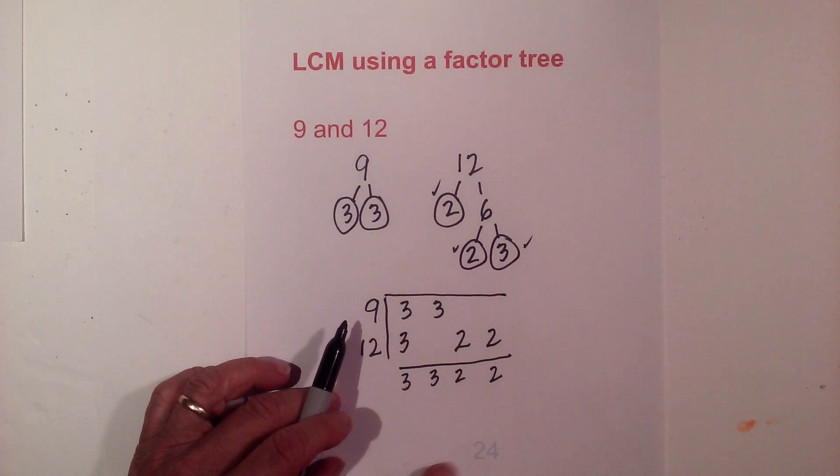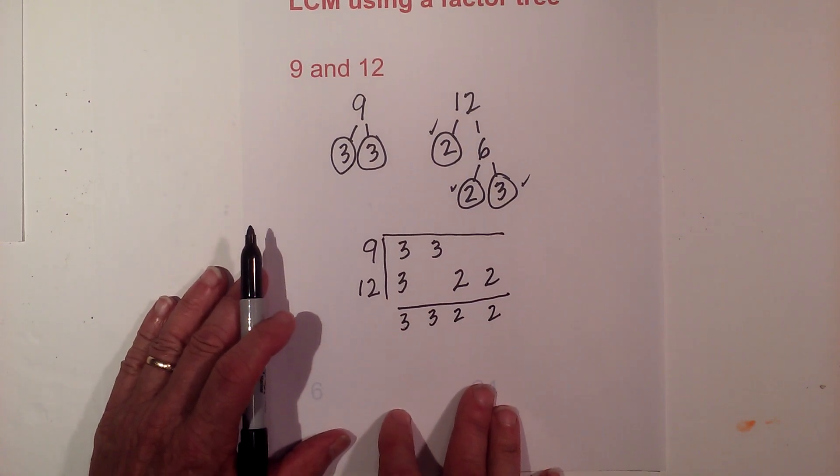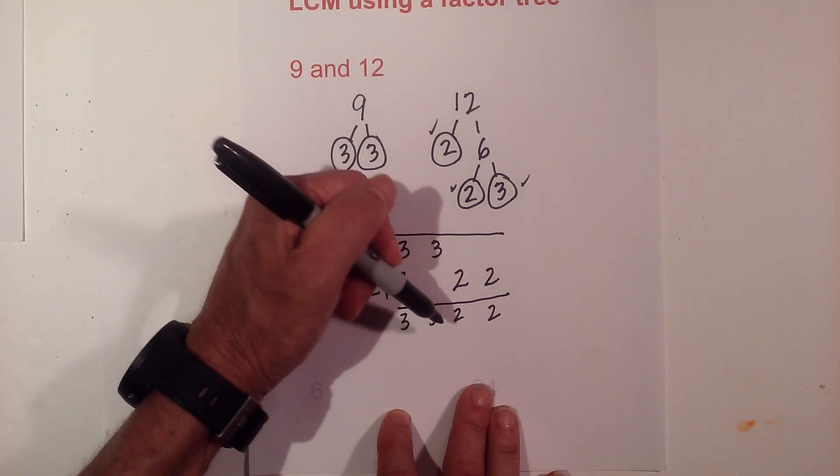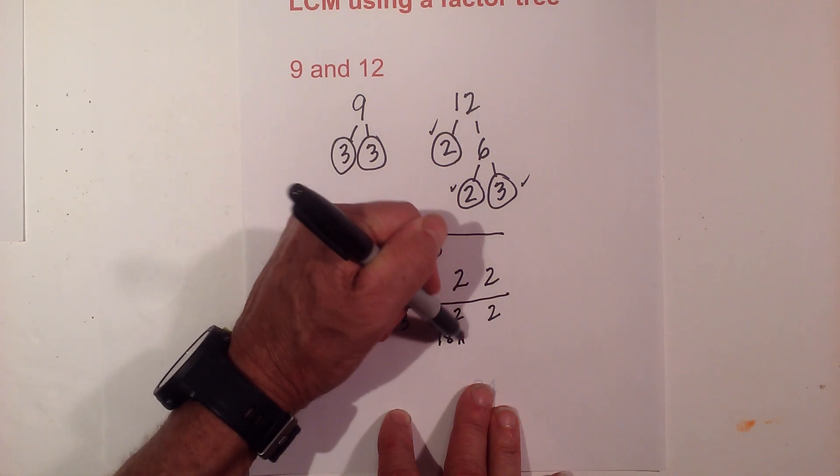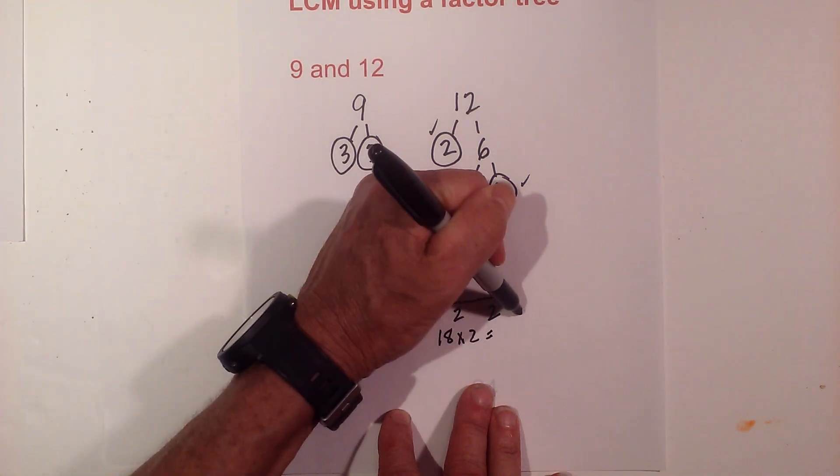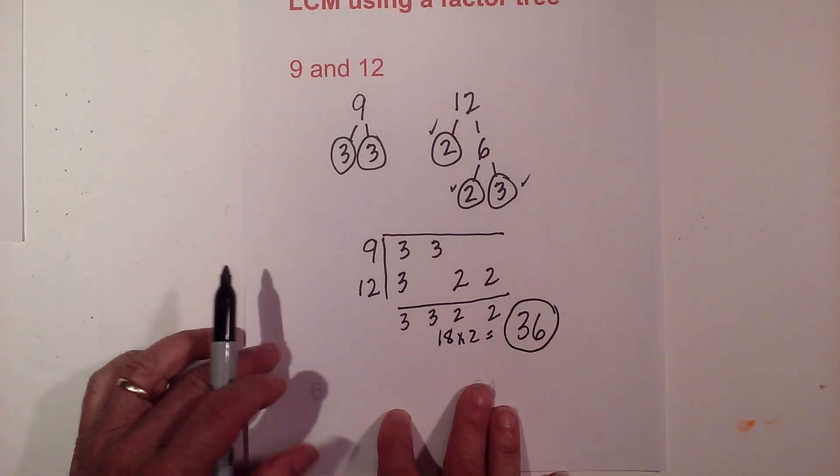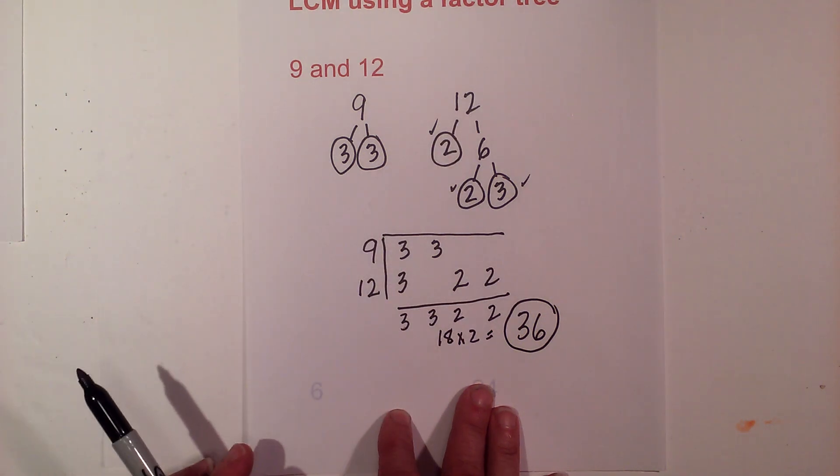And then all I do is multiply these together. I am going to move this up a little bit so I am going to run off the paper. So 3 times 3 is 9, 9 times 2 is 18, and 18 times 2 equals 36. So the least common multiple for 9 and 12 is 36.